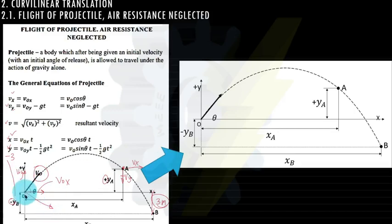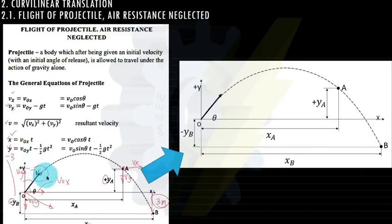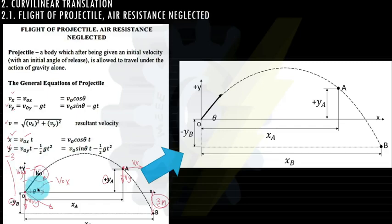The angle of inclination is mostly measured with the horizontal. If the angle is given with the vertical instead, we can adjust the equations using trigonometric functions. Specifically, v sub o x equals v sub o cosine theta, and v sub o y equals v sub o sine theta.